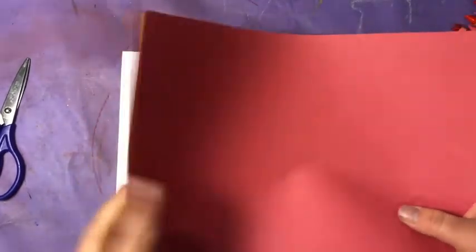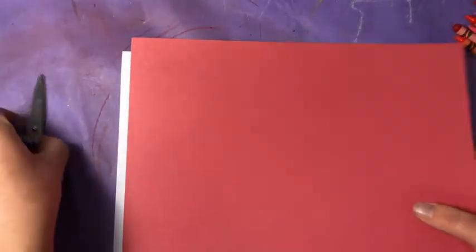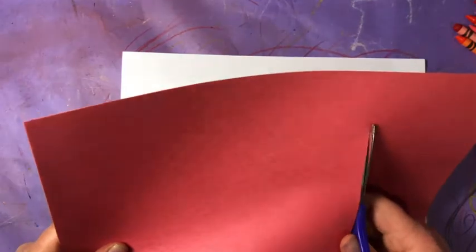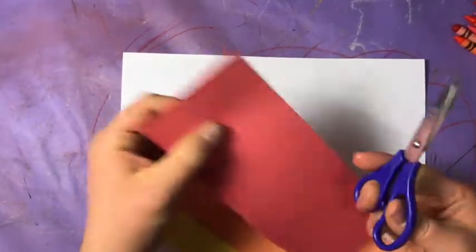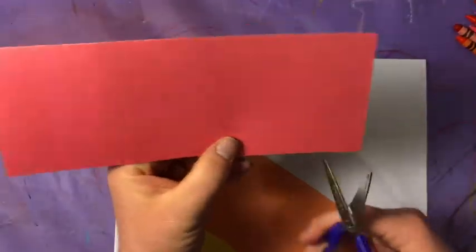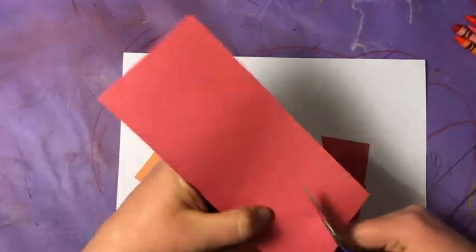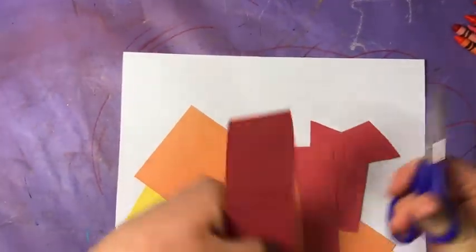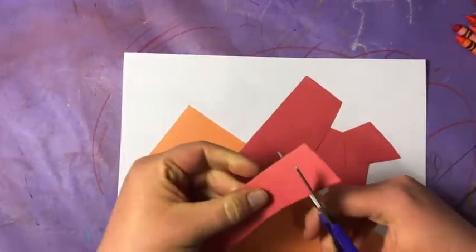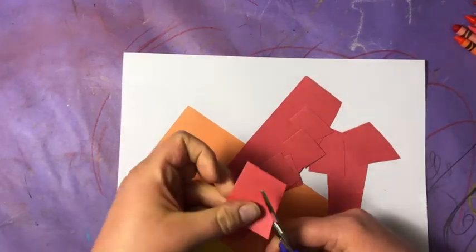So now these full sheets of warm colored paper, I'm just going to cut off a strip of each because we don't need the full paper, we just need some pieces of each. So with these pieces, just take your scissors and practice cutting. You can cut them into little pieces. It can be any shape.